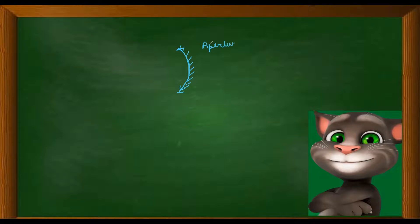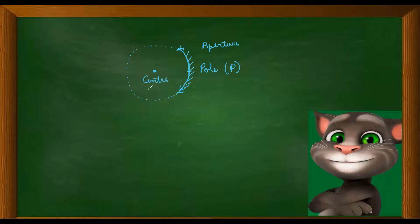This is our concave mirror. This portion of the spherical mirror is known as the aperture of the mirror. The center of the aperture is called the pole, represented by capital P. The spherical mirror is part of a sphere, and the center of that sphere is known as the center of curvature. The radius of this sphere is known as the radius of curvature, represented by capital R.